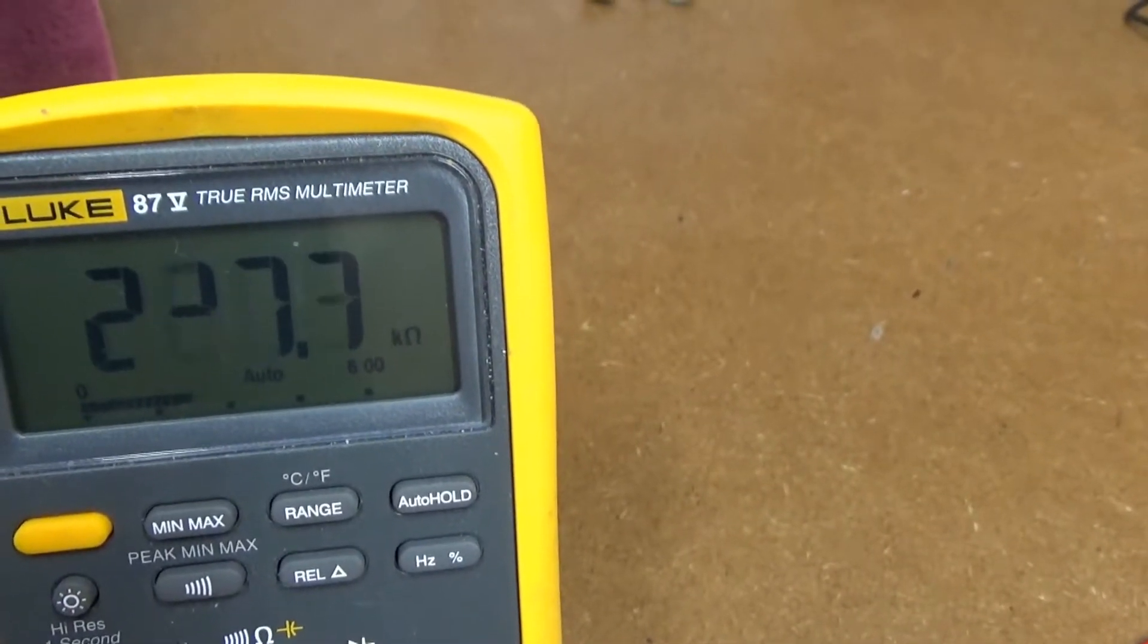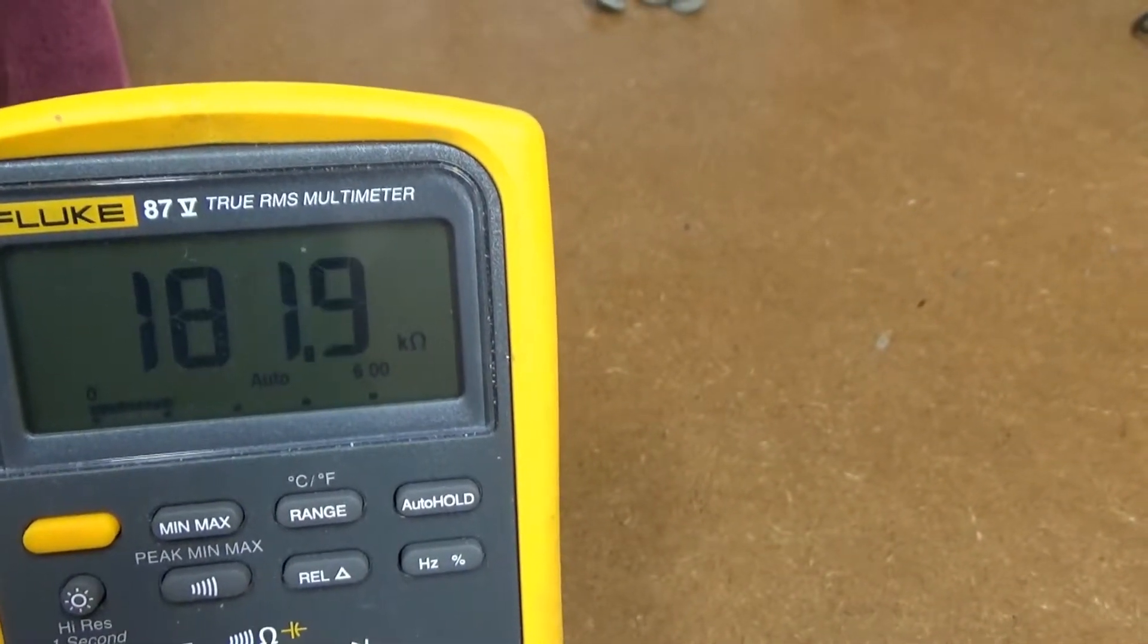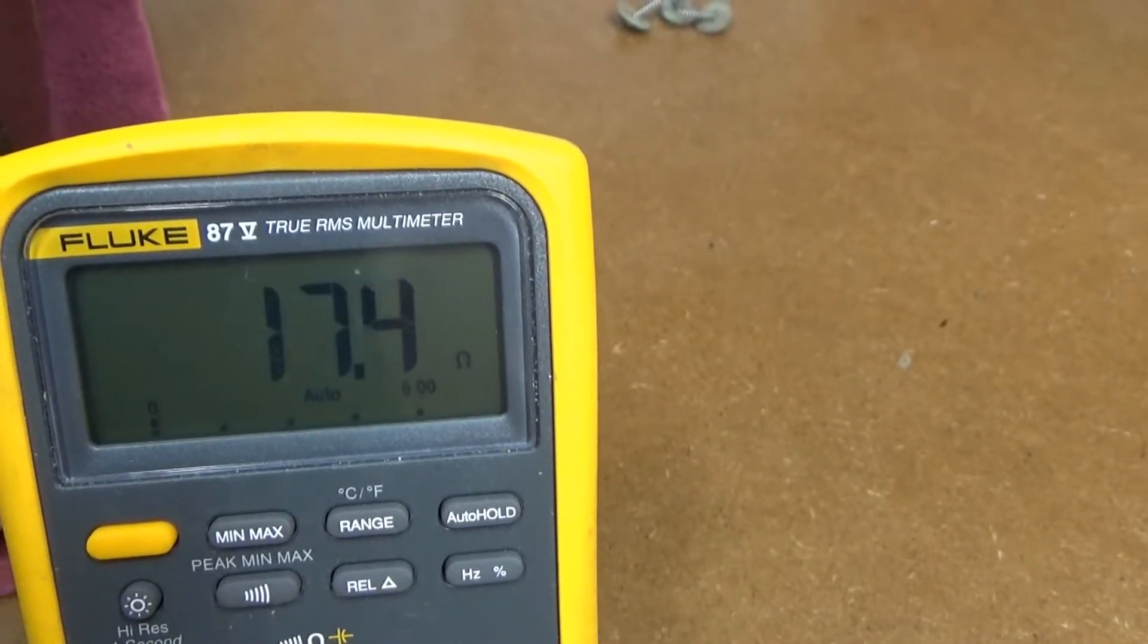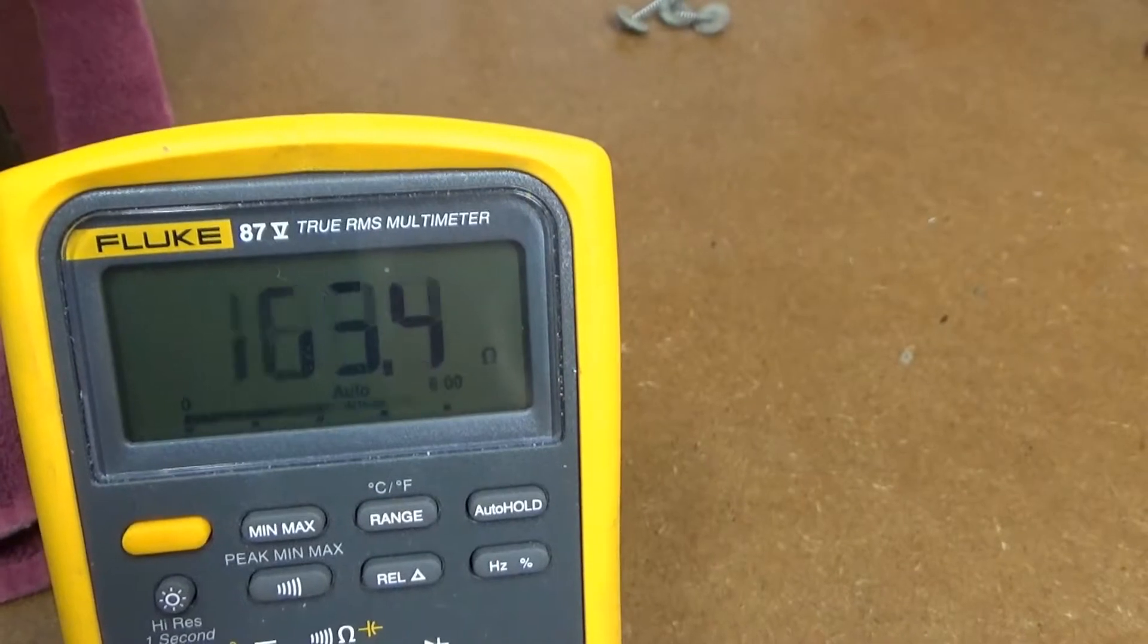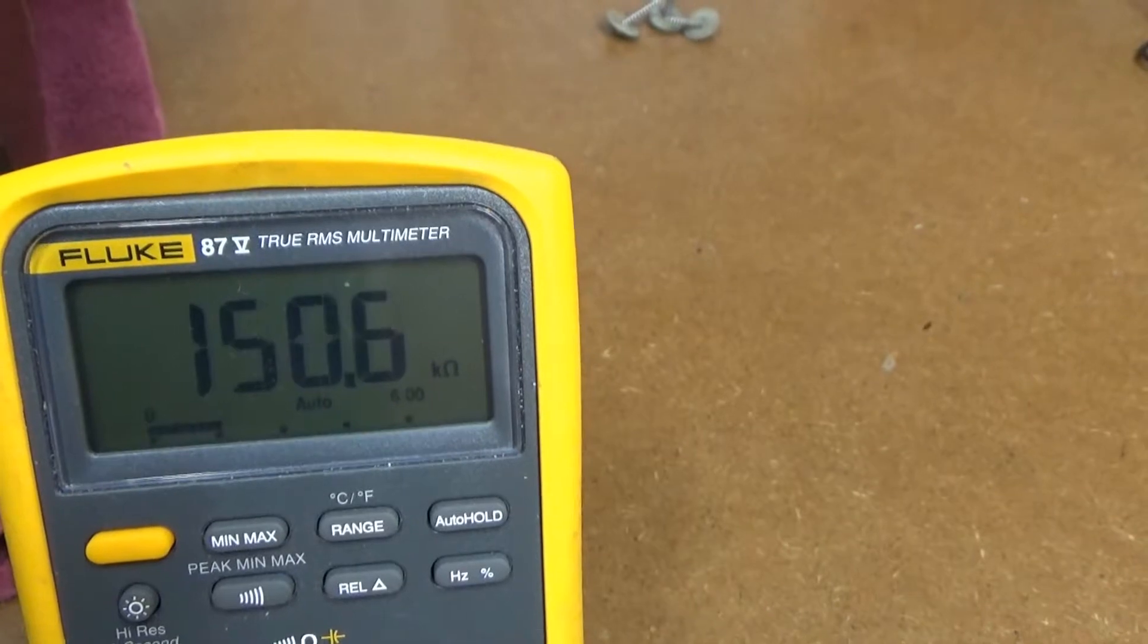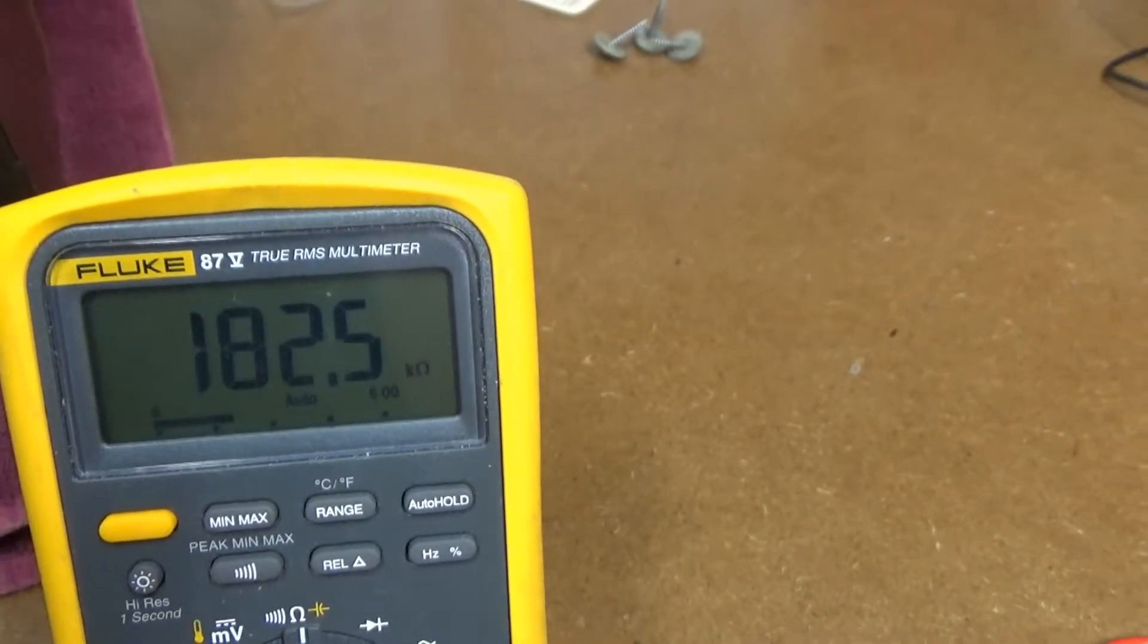You've got that little bar graph down at the bottom that kind of shows you. But as the thing auto-ranges, it jumps around and makes it hard to really see. Here I'm at the minimum, and as it goes up in volume, it jumps around and auto-ranges. It's hard to really tell if you've got a nice smooth action.